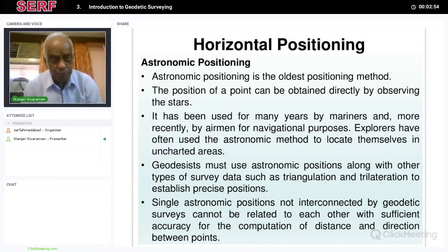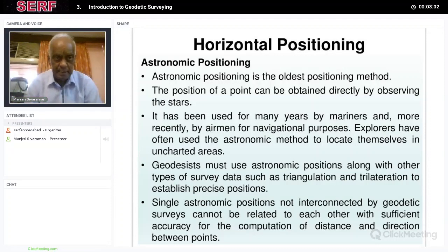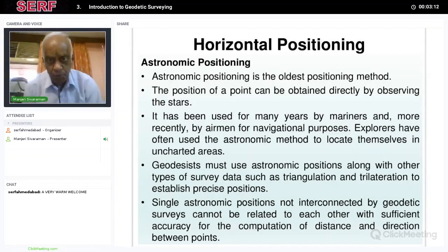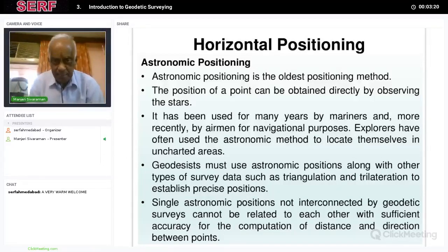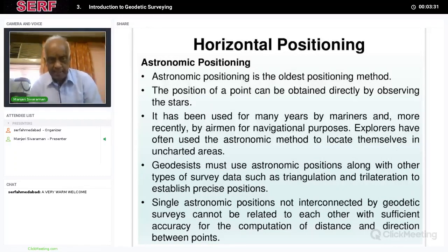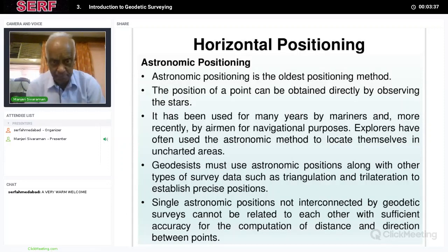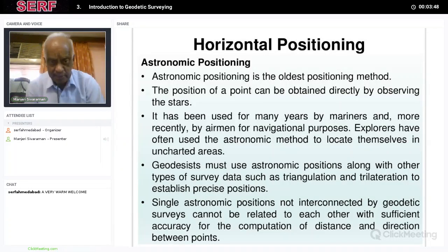The position of a point on the surface of the earth — that is, the coordinates latitude and longitude — can be obtained directly by observing the stars. That is the basic principle in horizontal positioning. It has been used for many years by mariners observing the pole stars for travel, and also by airmen for navigational purposes. Explorers like Columbus and Vasco da Gama have been using astronomical methods to locate themselves in uncharted areas or at sea, basically using geodesy for navigating using the stars.